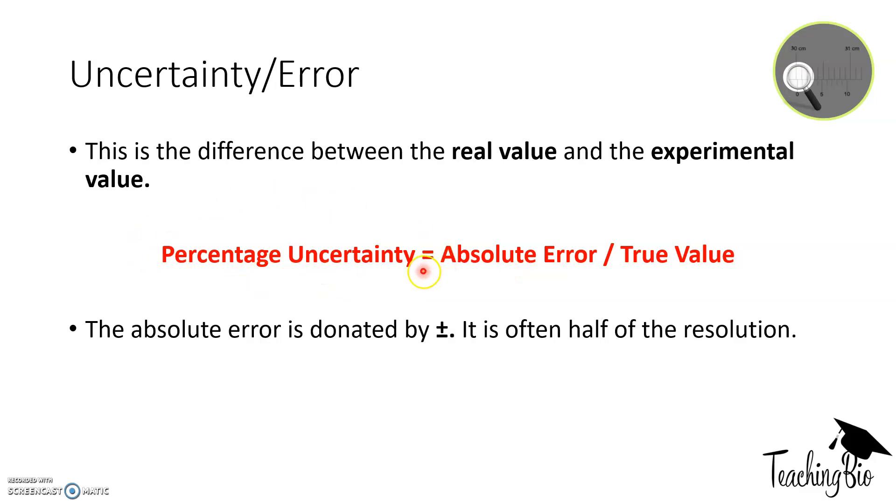We can work out the percentage uncertainty by taking the absolute error and dividing it by the true value. The absolute error in an exam question will be denoted by the plus or minus sign, so this is the range effectively. This means your recorded value can either be this many digits above or below, the upper and lower bounds of whatever value you've recorded. Sometimes they might not give you the absolute error and they give you the resolution, but you need to recall that half of the resolution will be the absolute error.